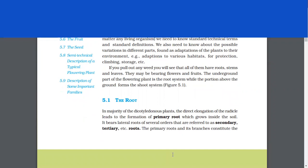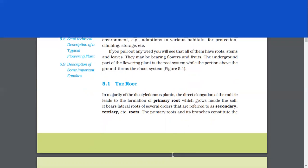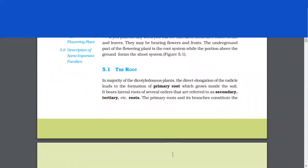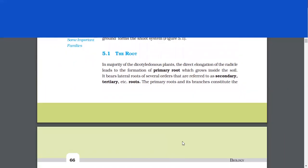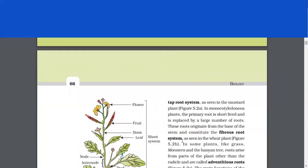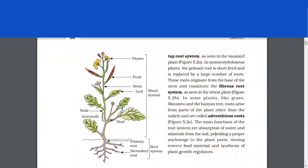The root. In majority of the dicotyledonous plants, the direct elongation of the radicle leads to the formation of primary root which grows inside the soil. It bears lateral roots of several orders that are referred to as secondary, tertiary, etc. roots. The primary roots and its branches constitute the tap root system as seen in the mustard plant.